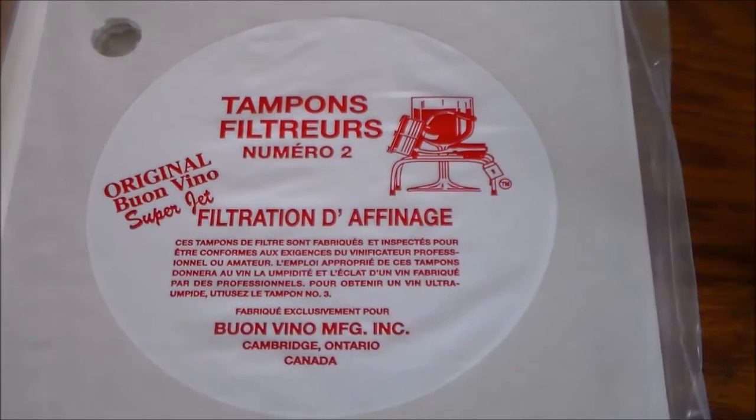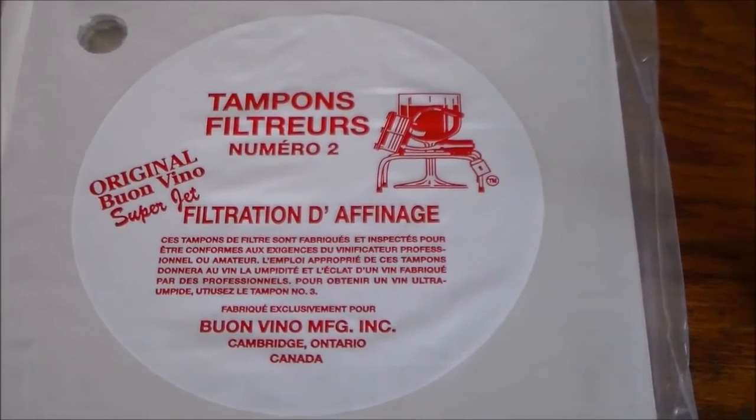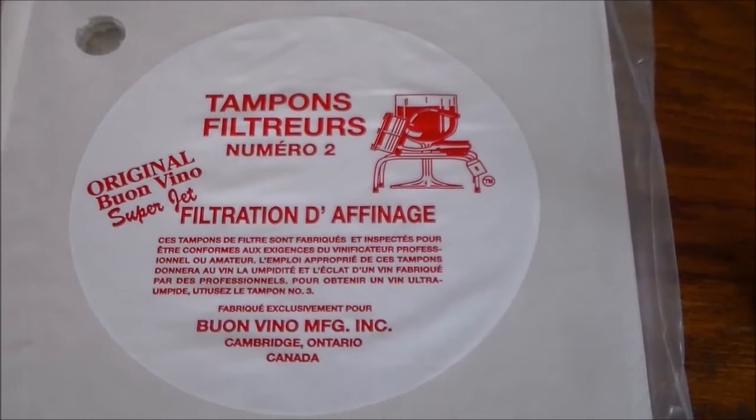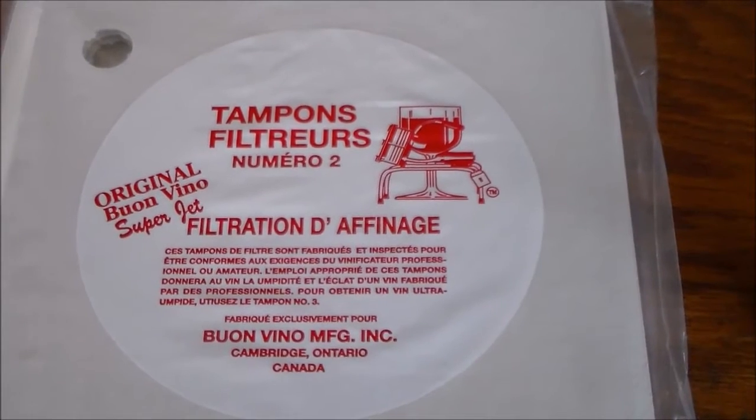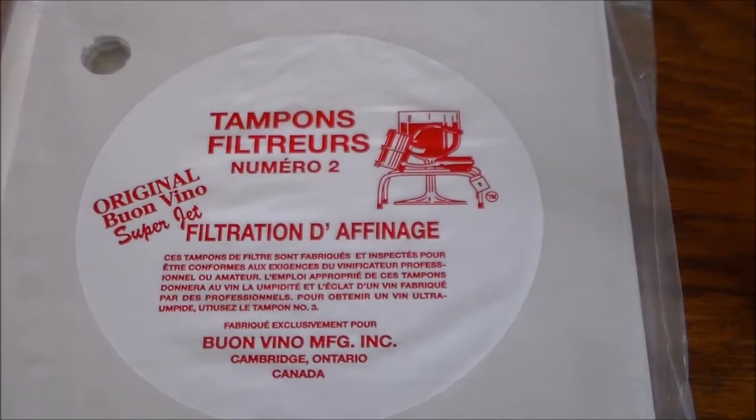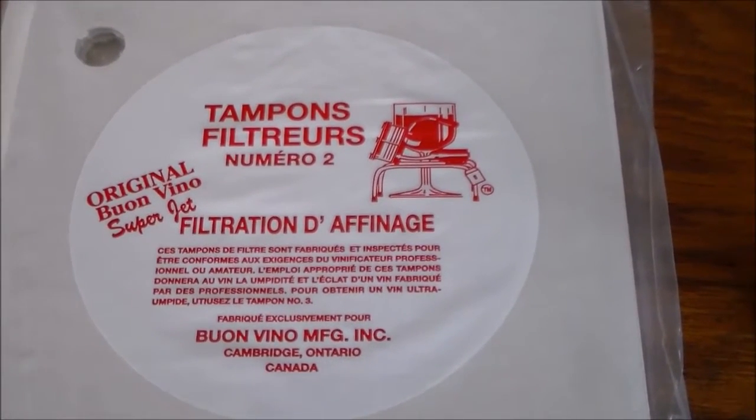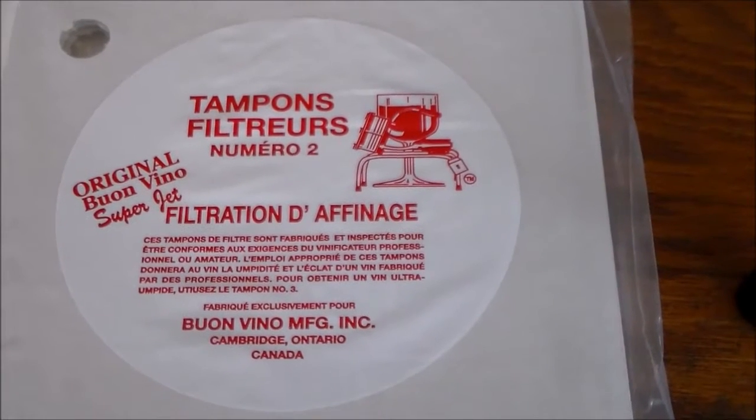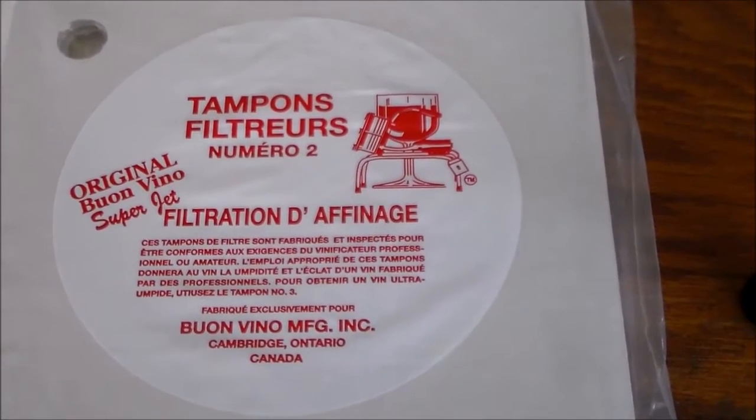The filter pads, before you use them, you want to soak the pads in water for about a minute, make sure both sides are saturated. And then when you're running the filter pump, the first liquid that will come out of the outtake will be the water that was saturated into the pads. You want to discard this before you start collecting the wine.